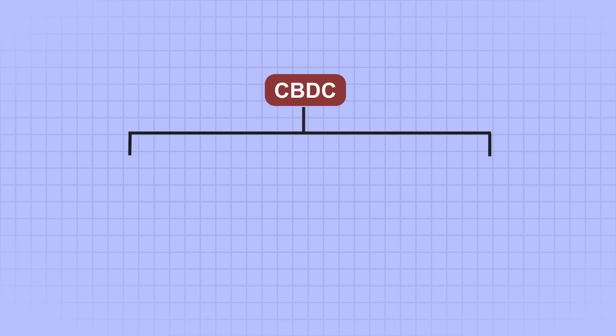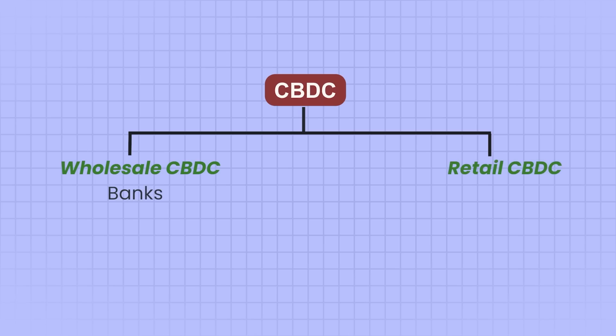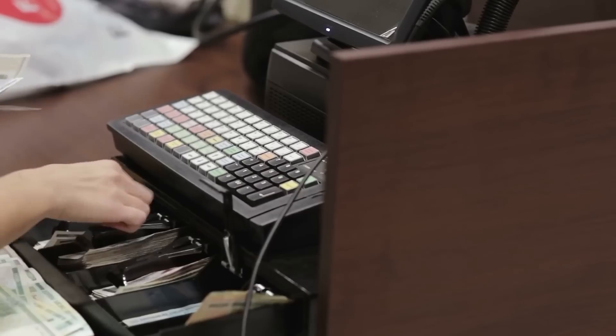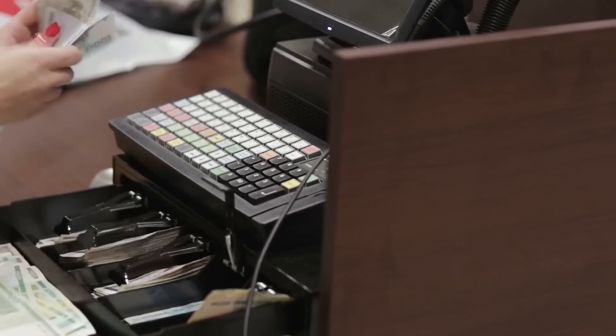In CBDC, there are two types: Wholesale CBDC, which is meant for banks, and Retail CBDC, which is meant for consumers like you and me. So the question is, with everything working perfectly fine in our current system, why do we need to transition to CBDC? And what are the problems that CBDC will solve for India and the world?